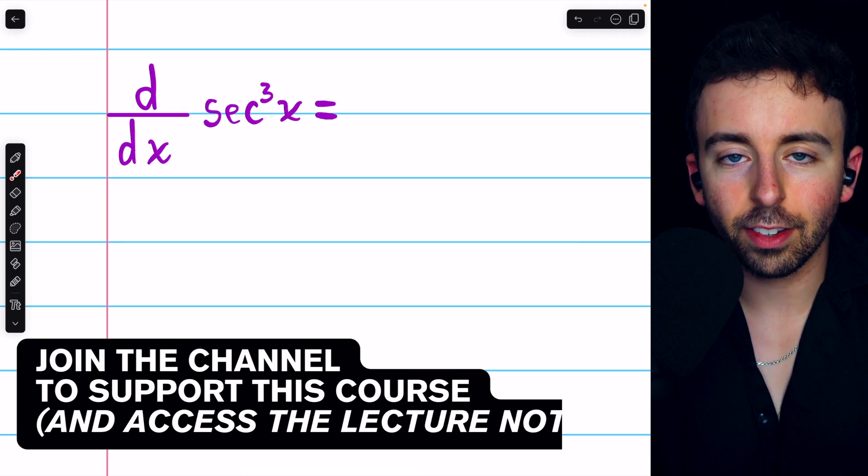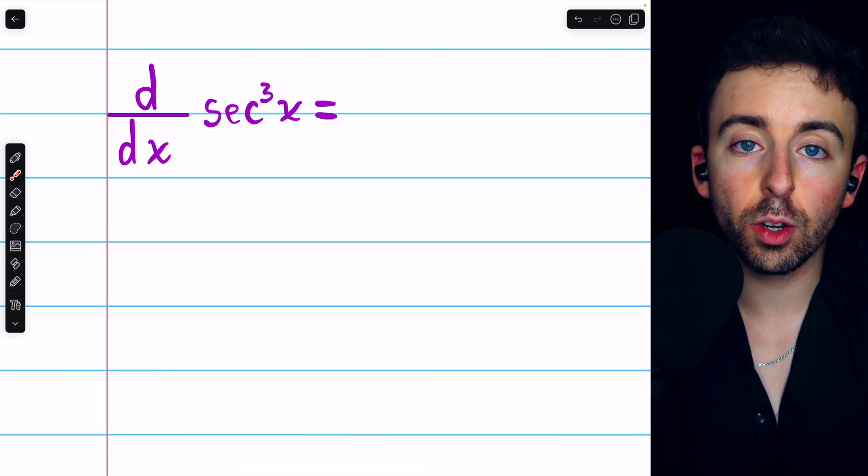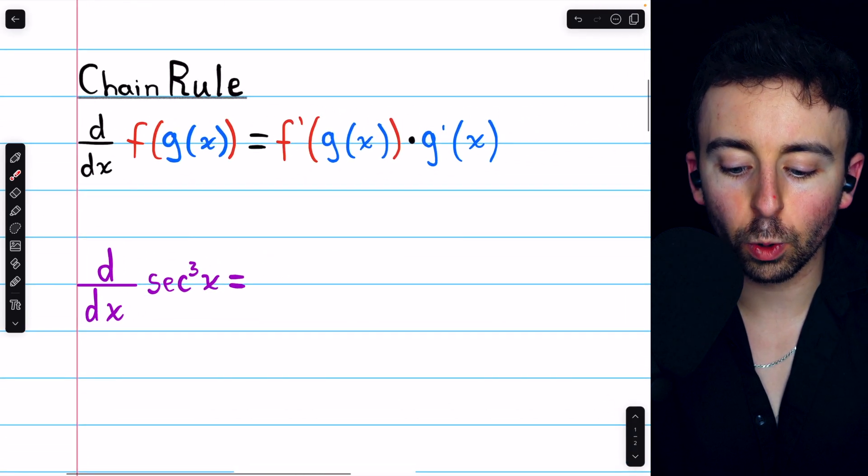Secant cubed of x is a composite function, it's secant inside the cubed function. So to find its derivative, we must use the chain rule.